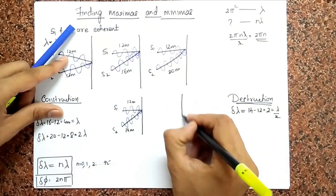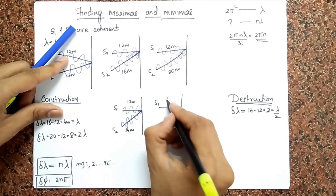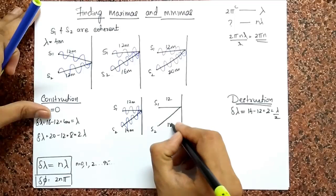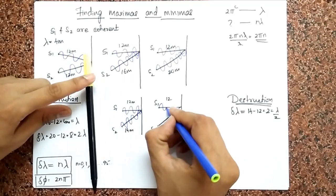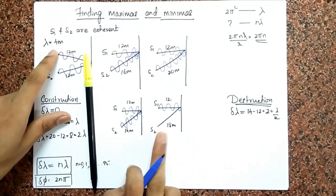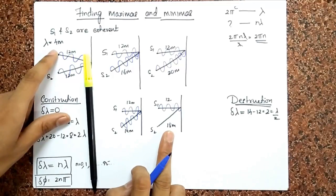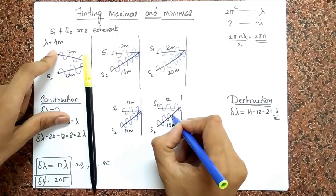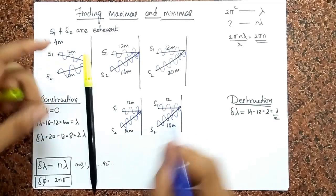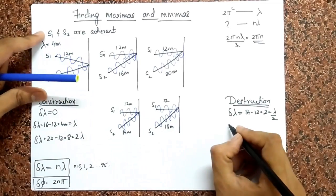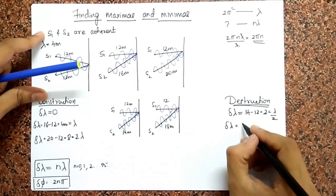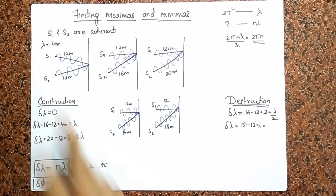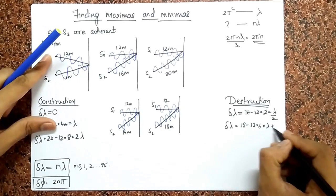When else do I get destruction? Keep S1 at 12 meters but let S2 travel 18 meters. S1 still has three waves. S2: 16 meters corresponds to four waves, plus an additional two meters which is another half. So four and a half waves. Again, they kill each other — destruction. The path difference is 18 minus 12, which is 6, and 6 equals lambda plus lambda over 2.